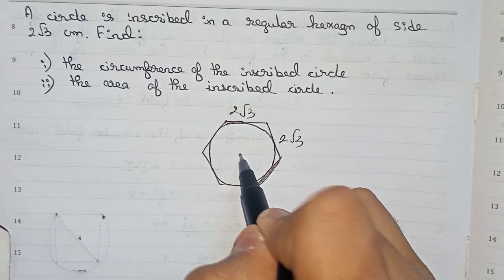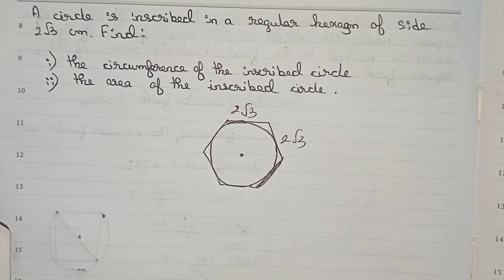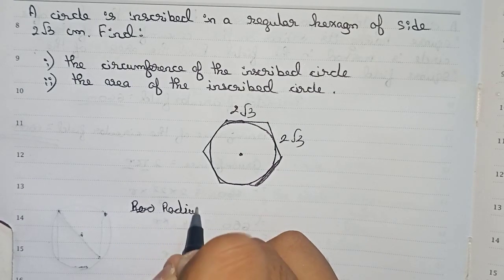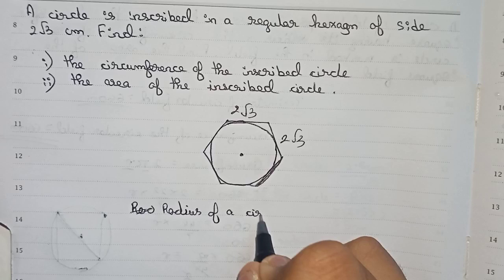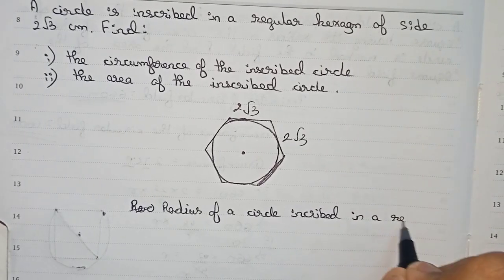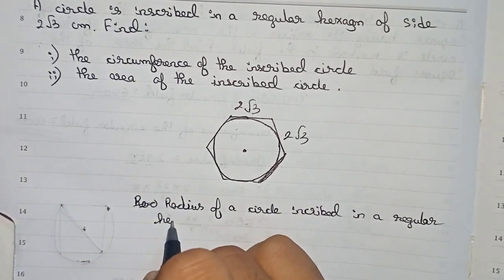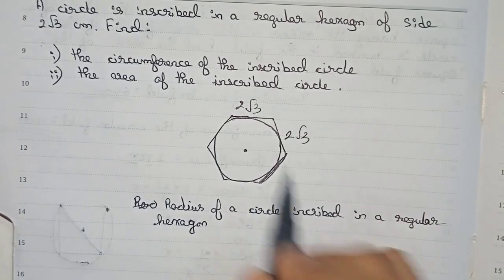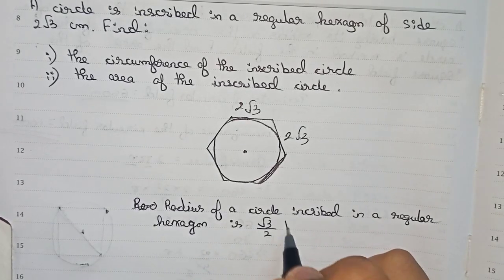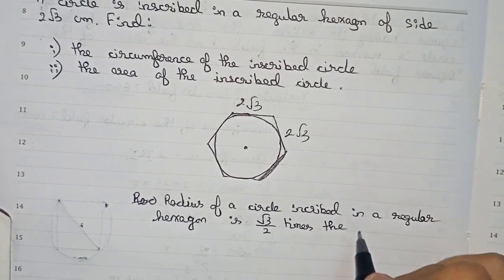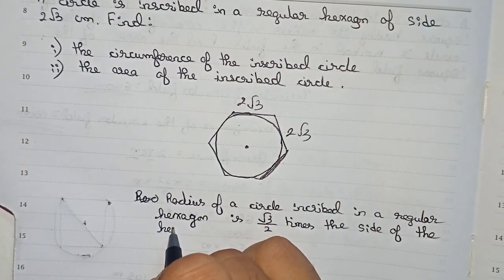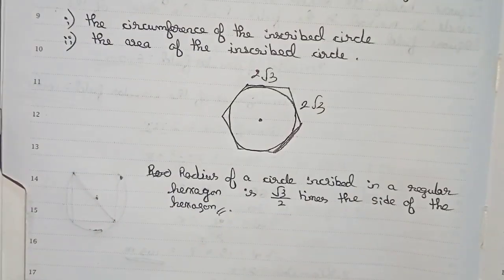So let this be a point. Now in this question we are going to use a formula. The formula for the radius of a circle inscribed in a regular hexagon is root 3 by 2 times the side of the hexagon. This is the general formula.